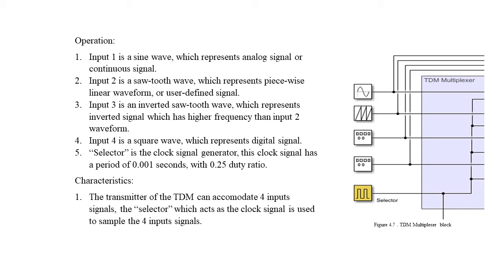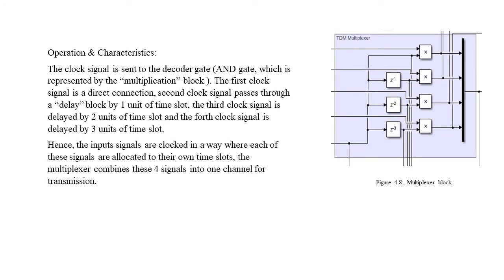The transmitter can accommodate four inputs. Inside the time division multiplexer, the clock signal is being sent and split into four, and each signal has different delay time shifts. The first one has no delay, the second one has one unit delay, the third has two units of delay, and the fourth has three units of delay. The input signals are clocked in a way where each signal is allocated to its own time slot, and they do not interfere with each other.